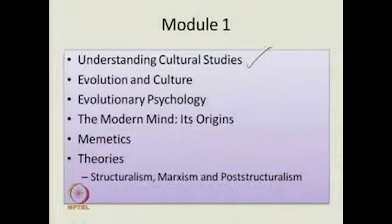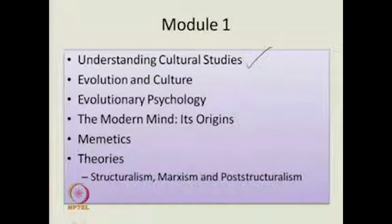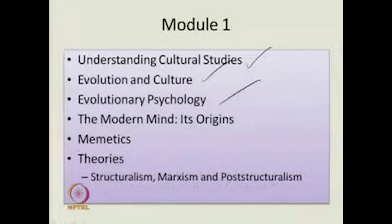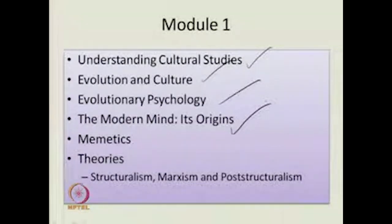We did two lectures on understanding cultural studies, and then, following Chris Barker, we argued that it is not wise to leave out the contributions from science. We looked at evolution and culture, we looked at evolutionary psychology, and we recalled the five principles of evolutionary psychology. We looked at the origins of the modern mind, and at an analogy between cultural transmission and genetic transmission using memes, drawing the analogy from genes in the theory of memetics.